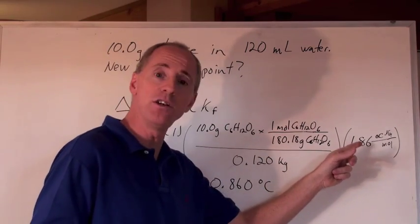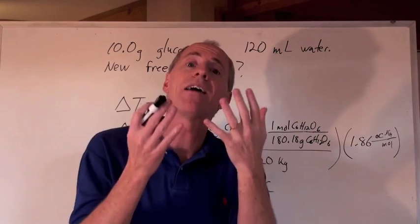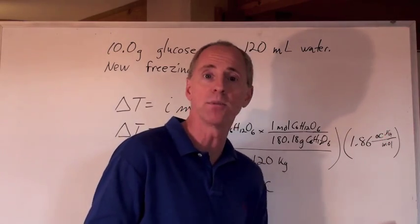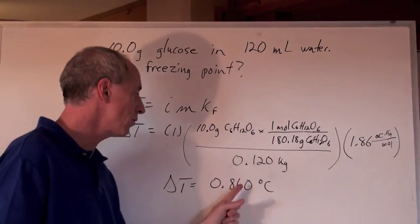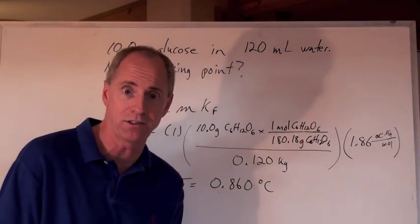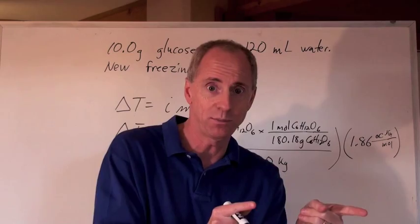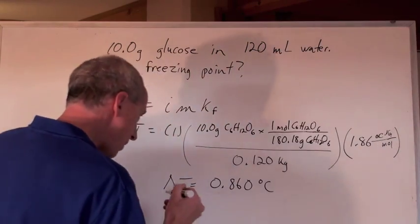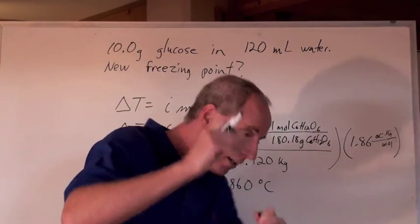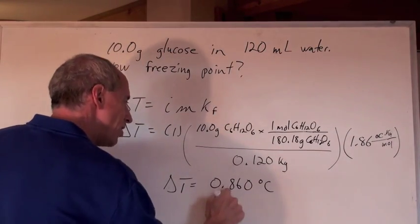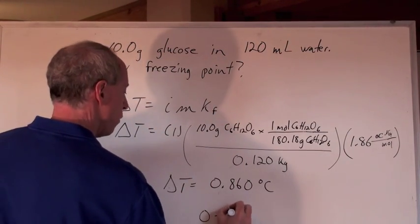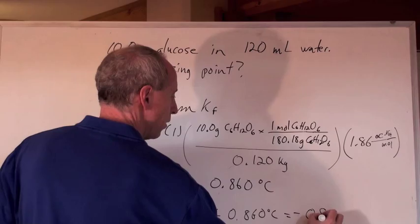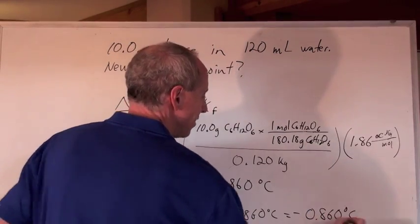And then, the freezing point depression constant, you actually have to have that given to you, or you have to look it up. And for water, it's 1.86 degrees Celsius kilograms per mole. When you do all of this math here, you get 0.860 degrees Celsius, and that's not the answer. That is the change in the freezing point. That's the delta T. So, what do you have to do? You have to use your logic and say, freezing points get depressed. And so, this is going to be the change in temperature from 0, so 0 minus 0.860, that's degrees Celsius and degrees Celsius, is going to give you negative 0.860 degrees Celsius, and that's the answer.